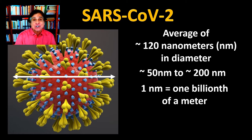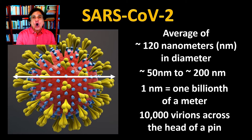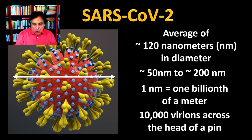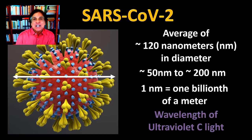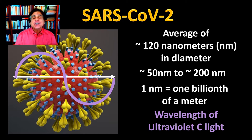How small are these particles? Very small. In fact, you could fit 10,000 SARS-CoV-2s on the head of a pin aligned end-to-end. Another way of looking at this is comparing the diameter to a wavelength of light. This image shows a wavelength of ultraviolet light, and the length of that wavelength is equal to about the diameter of SARS-CoV-2.